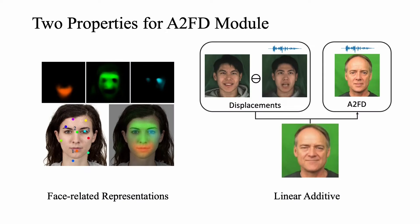To further extract the dynamic emotion from the emotional video, we perform empirical explorations for the motion model's intrinsic working mechanisms and find two interesting properties. Firstly, the dynamic movements in the facial region are only affected by specific key points and affine transformations. We denote them as face-related representations.